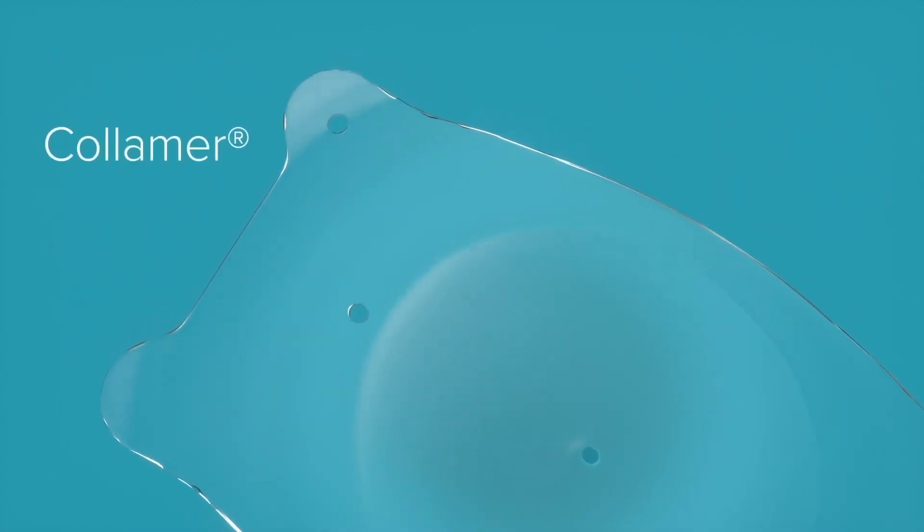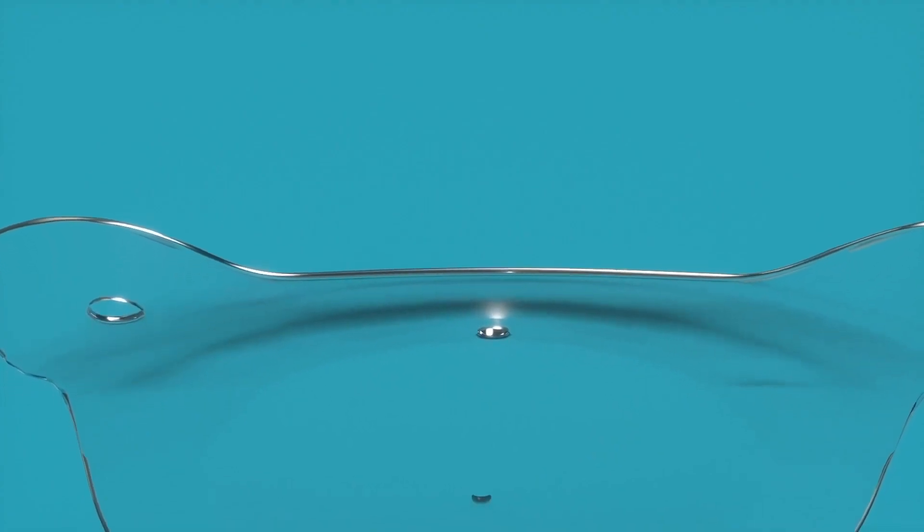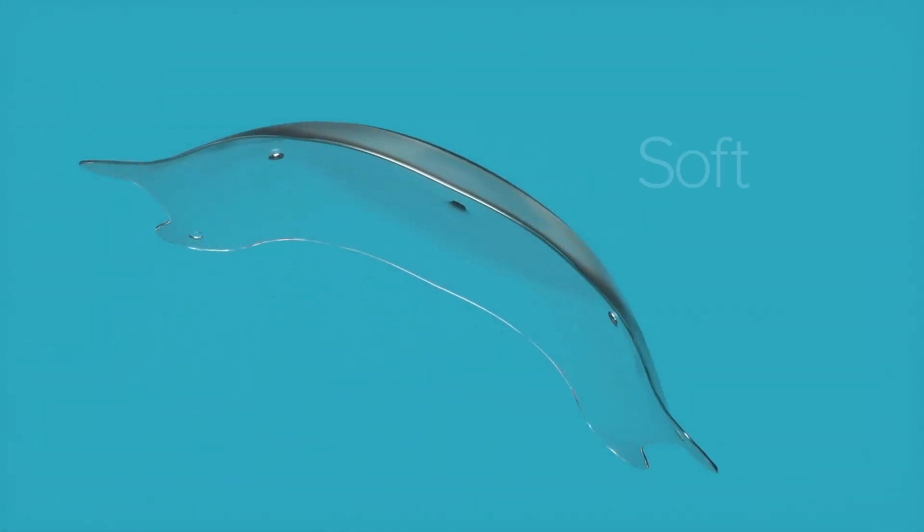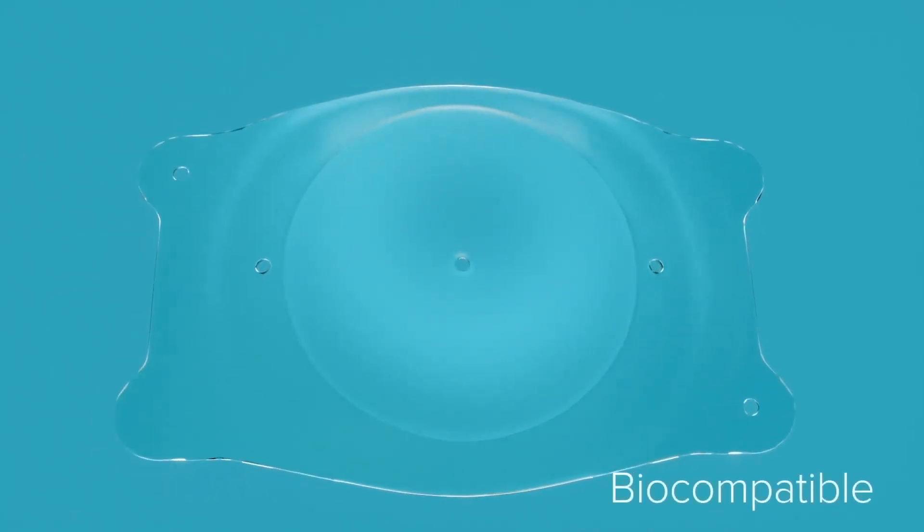EvoVizion ICL's Collamer material contains a small amount of purified collagen and the remainder is made of a similar material to that found in soft contact lenses. Collamer makes the EvoVizion ICL lens soft, flexible, and biocompatible, which means the lens is stable inside the eye.